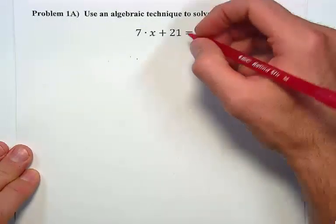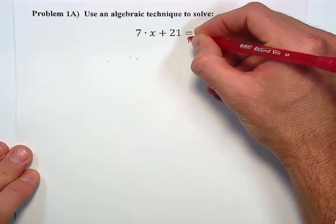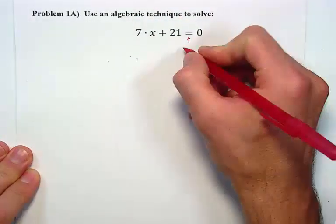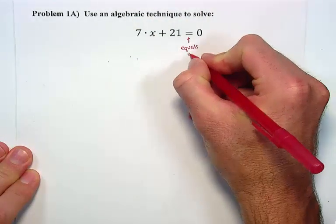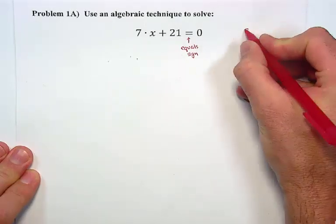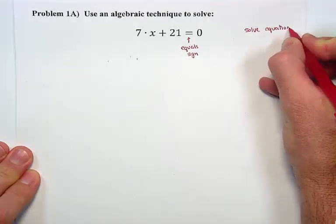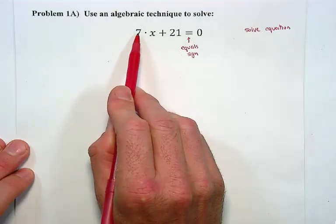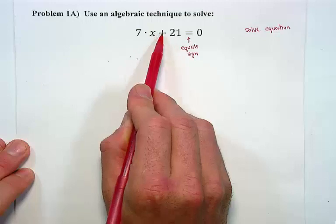After we've read the problem in full, we ask ourselves one simple question: In the mathematical statement on the page, is there an equal sign? In this case, we see the equal sign. We're going to solve our equation. This is a clear linear equation because we have the form mx + b.